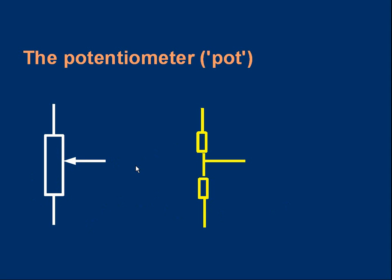The top part above the sliding contact is equivalent to the top resistor here, and the lower part below the sliding contact is equivalent to the bottom resistor.